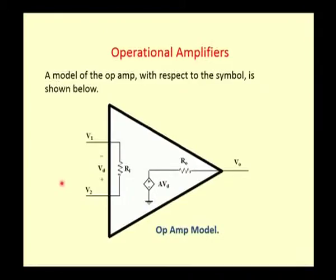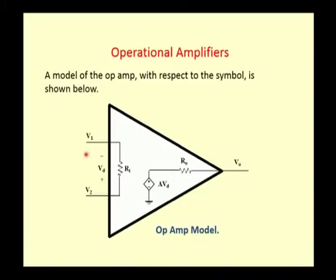An operational amplifier model is shown in the figure here. You have two inputs V1 and V2. V1 is known as the inverting terminal and V2 is the non-inverting terminal. The input resistance of the operational amplifier is denoted as Ri. A is the open loop gain, Vd is the difference voltage between V1 and V2, and R0 is the output resistance.